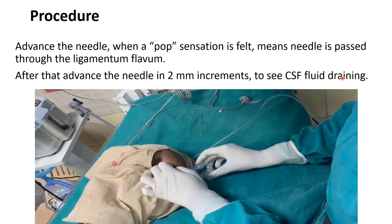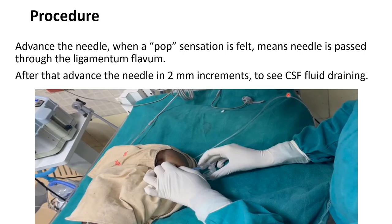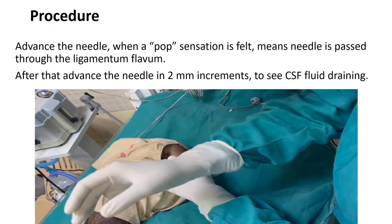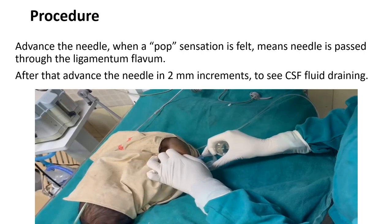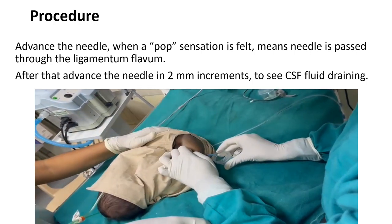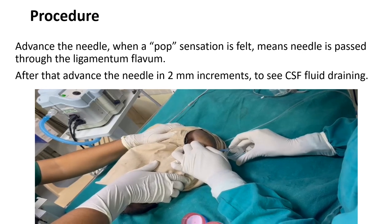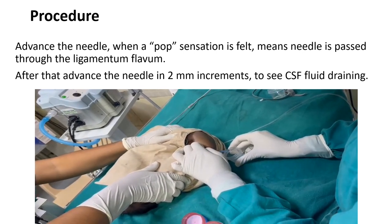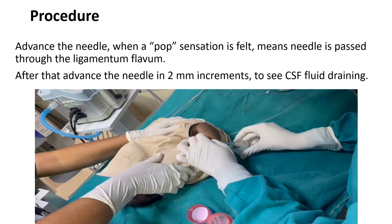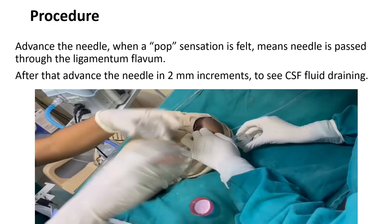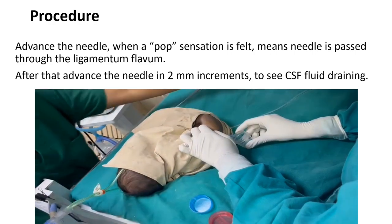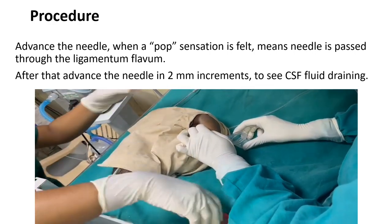When CSF fluid is draining, collect it in three vials. One vial for CSF biochemistry, in which CSF glucose and protein will be analyzed. Another for CSF microscopy, in which CSF cells, gram staining, and ZN staining will be performed. The third is for CSF culture. If you are suspecting tubercular meningitis, CSF ADA level should also be performed. Collect at least three vials for complete CSF analysis.